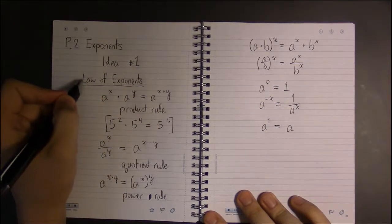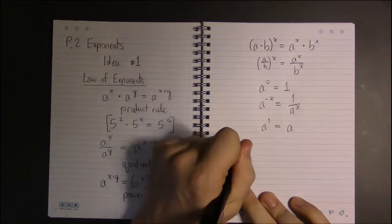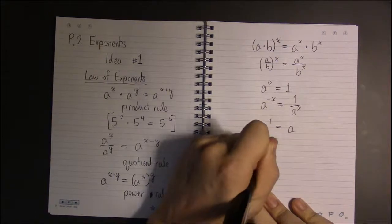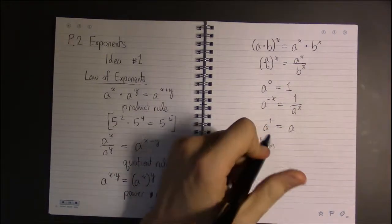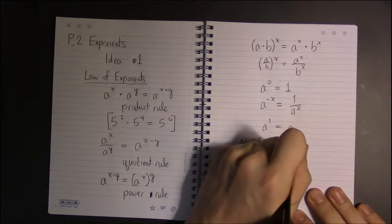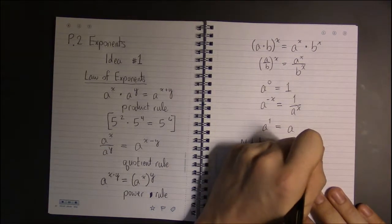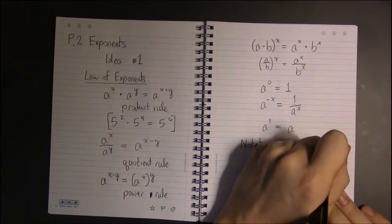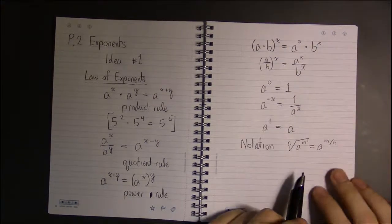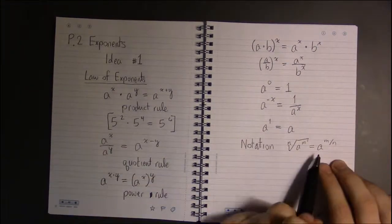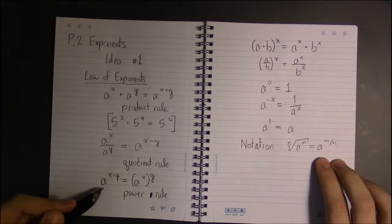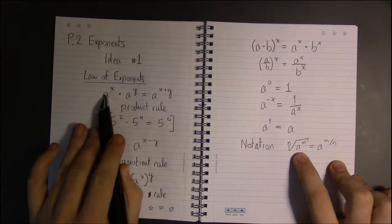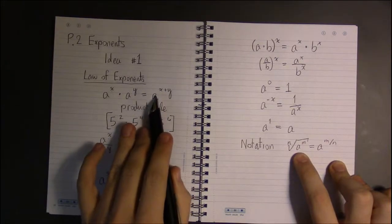Now the book separates out laws of exponents and laws of radicals, but there's really no need to. Because radicals, as we saw in the motivation video, radicals are just exponents with fractions in them. So all the laws of exponents apply to radicals.